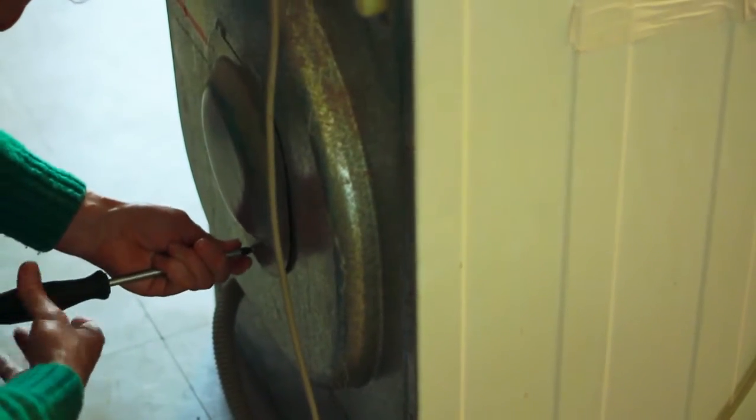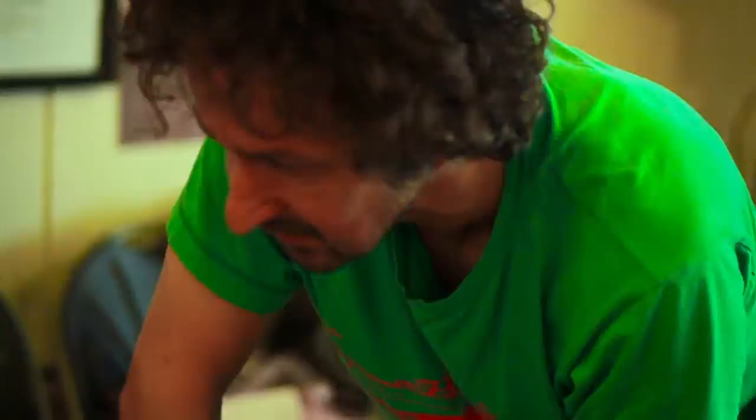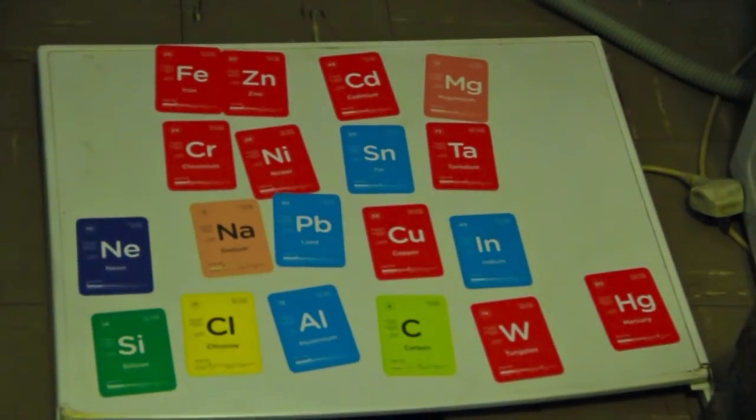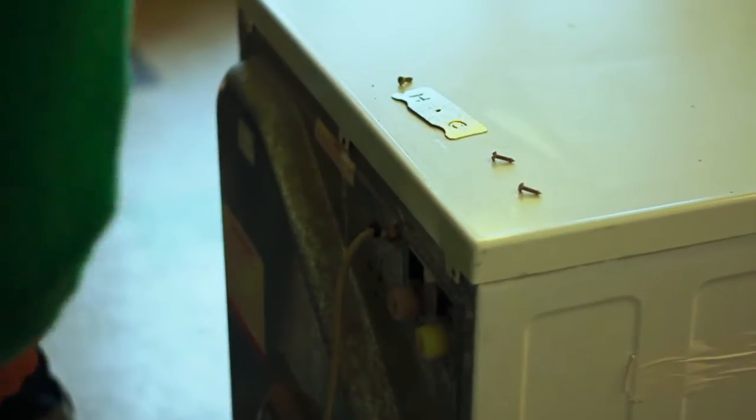We've got on the washing machine a nice array of elements, sort of aluminium, carbon, cadmium, groin, copper, and it goes on like that.